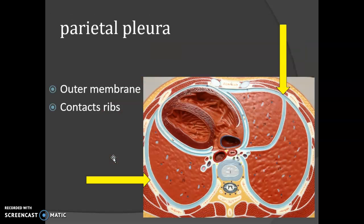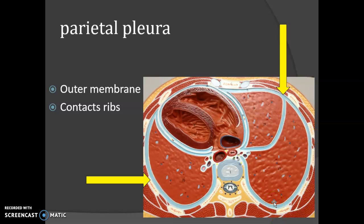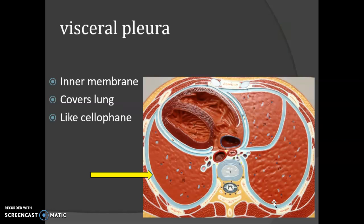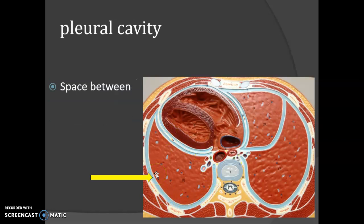Finally, we have the covering for the lungs. The parietal pleura lines the thoracic cavity — it is the outer membrane touching the ribs. The visceral pleura is the inner membrane covering the lungs. Between them we have the pleural cavity, which is filled with liquid in order to avoid friction.